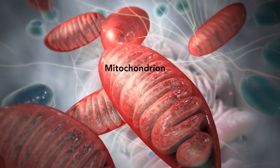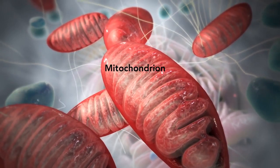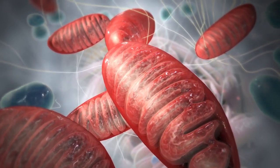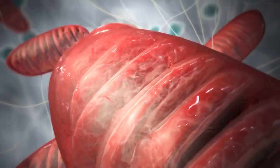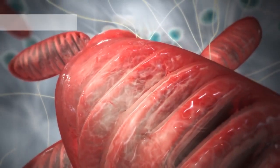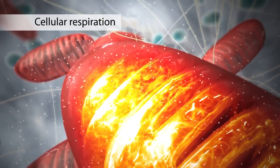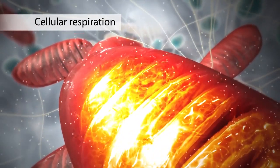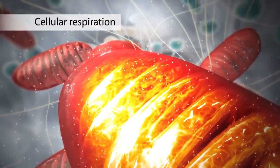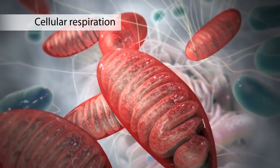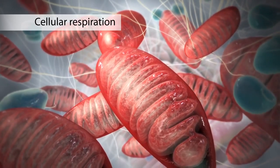The mitochondrion is an organelle that is the powerhouse for both animal and plant cells. During a process called cellular respiration, the mitochondria make ATP molecules that provide the energy for all of the cell's activities. Cells that need more energy have more mitochondria.